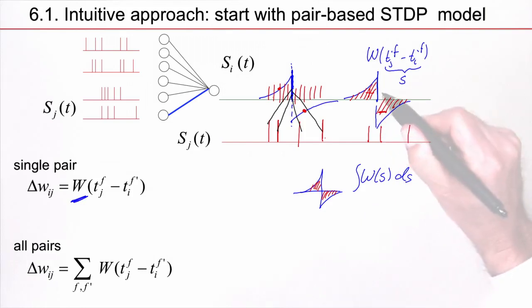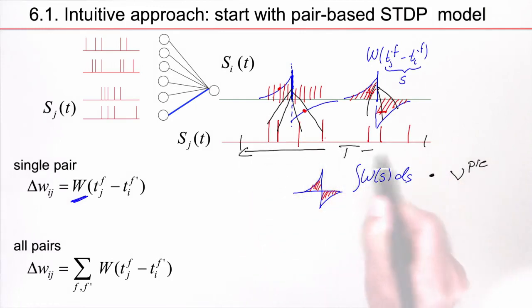Same thing over here, a pair post-pre, a pair post-pre, a pair pre-post, the number of these pairs increases with the presynaptic spike arrival rate. If I consider a certain time window over which I count the rate change, and I consider all pairs, then I see that the number of pairs will increase also with the number of postsynaptic spikes. If I have more postsynaptic spikes, then I have even more of these pairs.